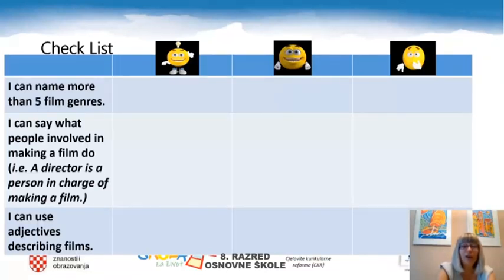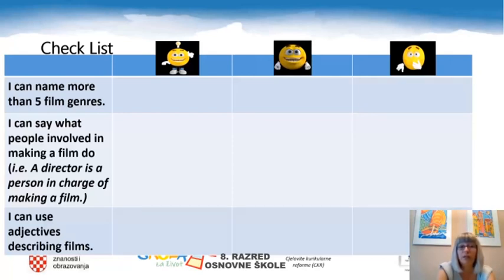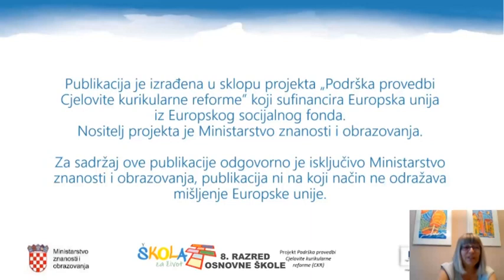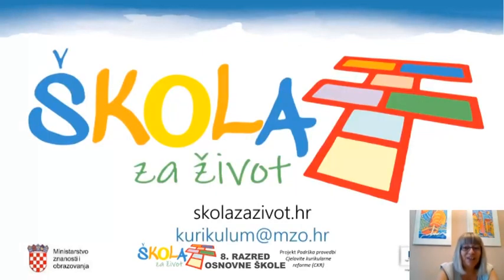As you can see, we are at the end of today's lesson and it's time for self-evaluation. In this checklist, there are three statements: I can name more than five film genres; I can say what people involved in making a film do — for example, a director is a person in charge of making a film; and I can use adjectives describing films. Think and tick the correct column, please. I hope that you liked today's lesson and that you'll soon have a chance to suggest someone: 'How about going to the movies?' Thank you for your attention, and until we meet again, bye-bye.